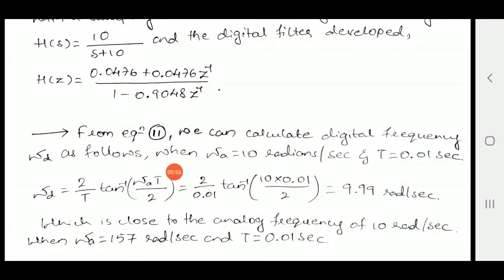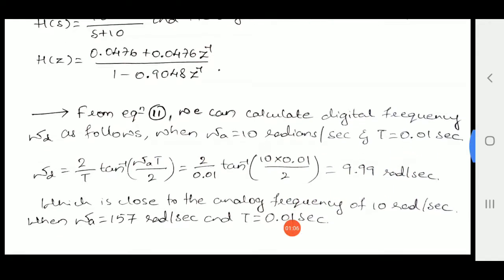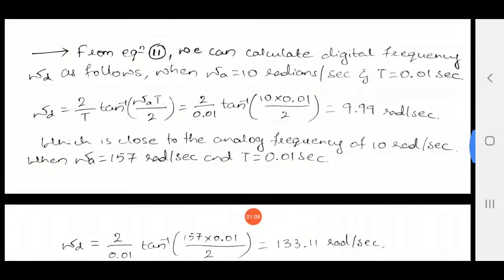As we know from equation 11 that we discussed in the previous video, we can calculate the digital frequency W_d as follows, when W_a is 10 radians per second with T is 0.01 second. We know that the value of W_d is 2/T tan inverse of W_a into T by 2. All the values are given, substitute, use the calculator, find the value of tan inverse, we will get it as 9.99 radians per second.